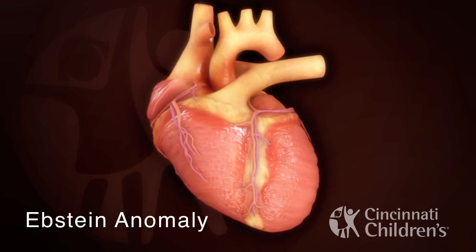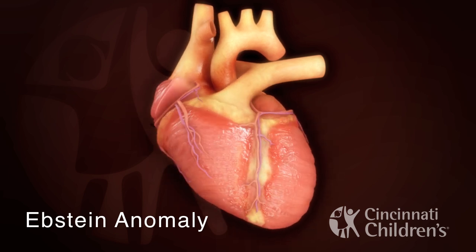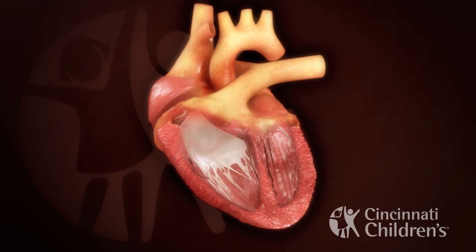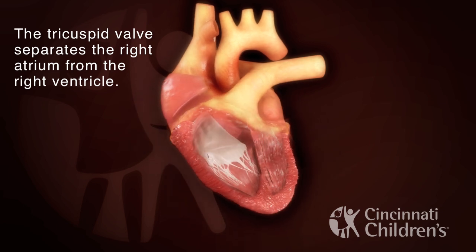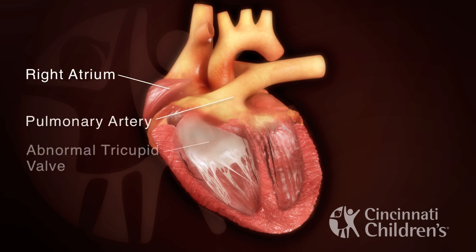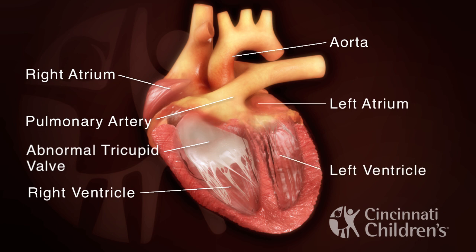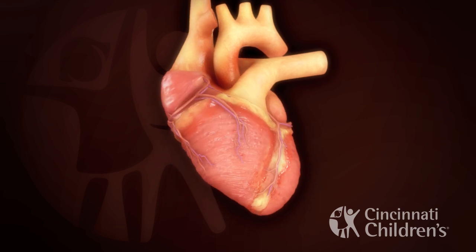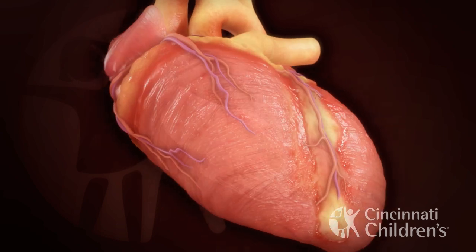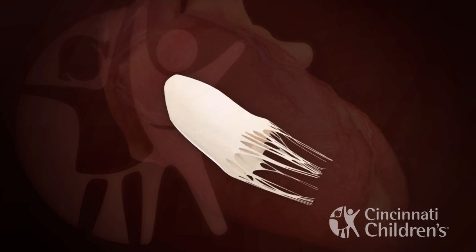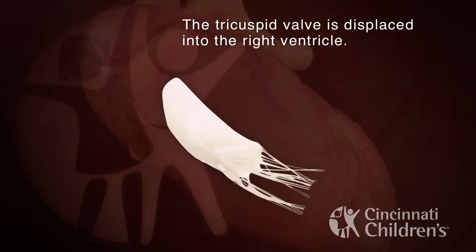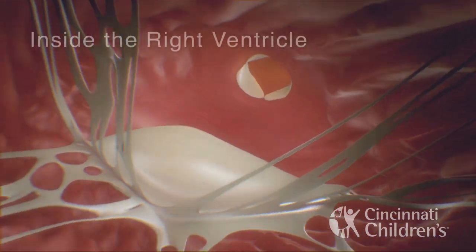Ebstein Anomaly refers to a defect of the tricuspid valve. The tricuspid valve separates the right atrium from the right ventricle. In Ebstein Anomaly, the tricuspid valve is displaced into the right ventricle.